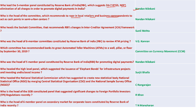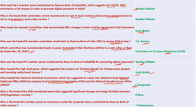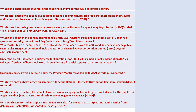Sunil Mehta's Sashakt Committee recommended RBI changes for inter-creditor agreements. VG Kannan's committee is reviewing ATM pricing. The Committee on Currency Movement asked to mount ATMs to wall pillars or floors. Surjit Bhalla proposed Elephant Bonds. Rangarajan Rajan's committee suggested merging CSO and NSSO to create one National Statistics Office. R. Khan suggested significant changes to the Foreign Portfolio Investor regulatory framework. TN Manoharan heads the six-member panel on secondary market for corporate loans constituted by RBI.